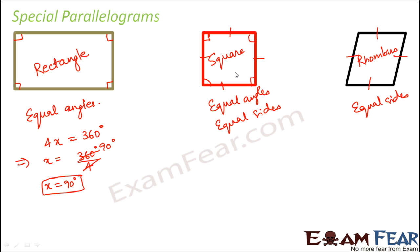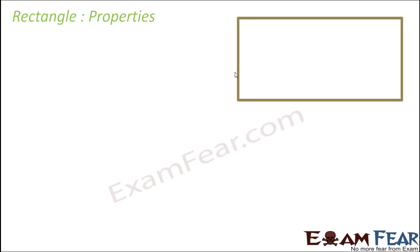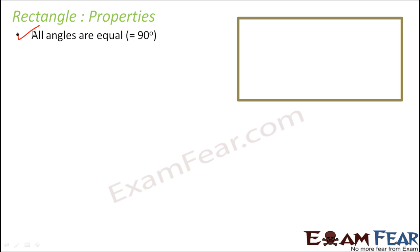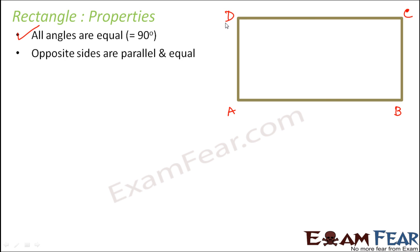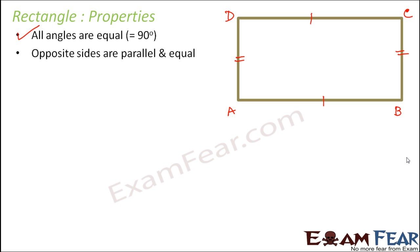So those are the special parallelograms we are going to discuss. Let us start with the properties of a rectangle. All angles are equal and each is equal to 90 degrees. Opposite sides are parallel and equal — so in rectangle ABCD, AB equals CD and AD equals BC. Diagonals bisect each other.